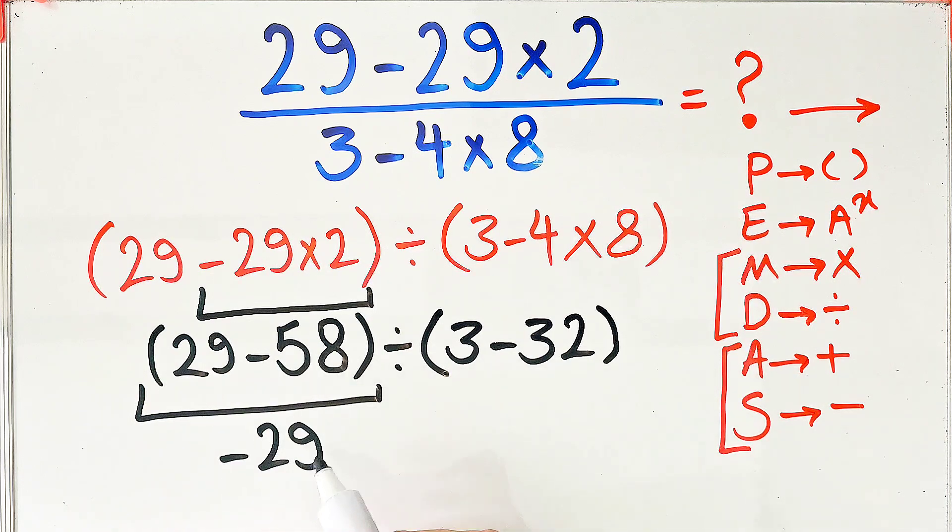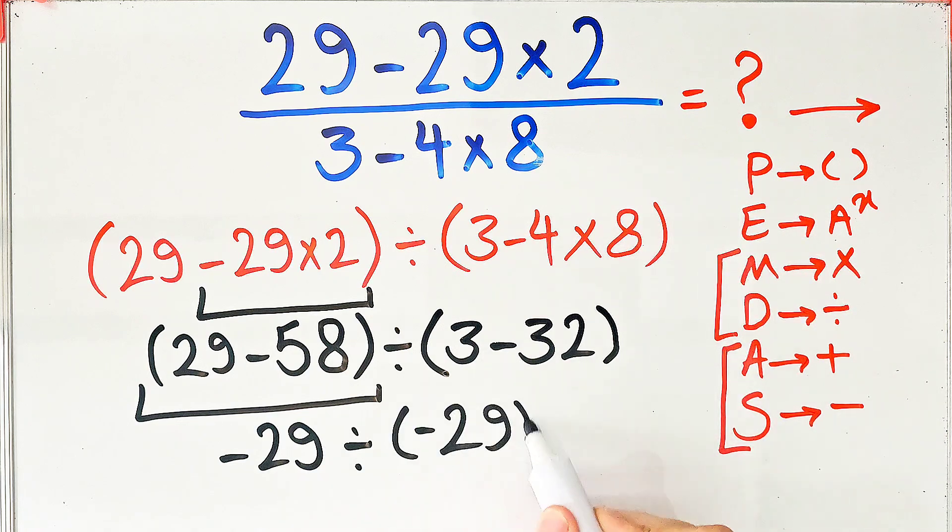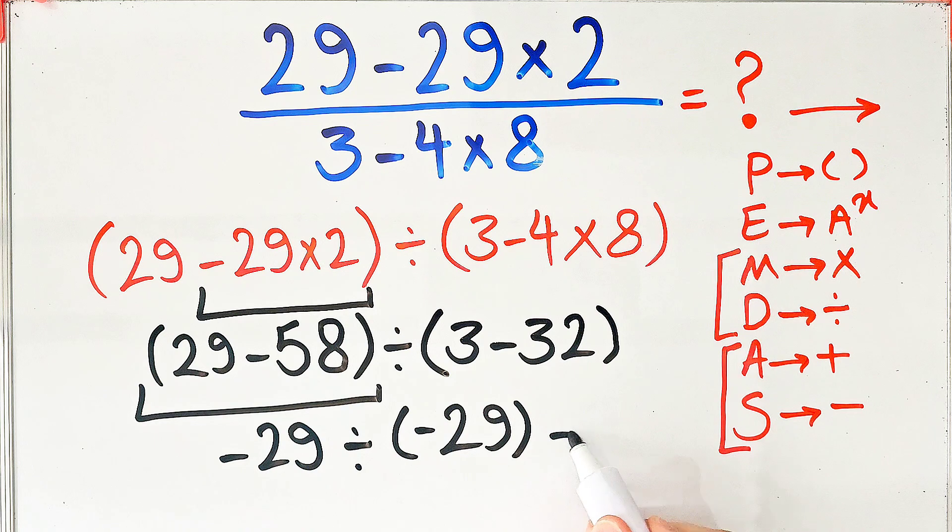Negative 29 divided by 3 minus 32 equals negative 29 divided by negative 29, which equals 1.